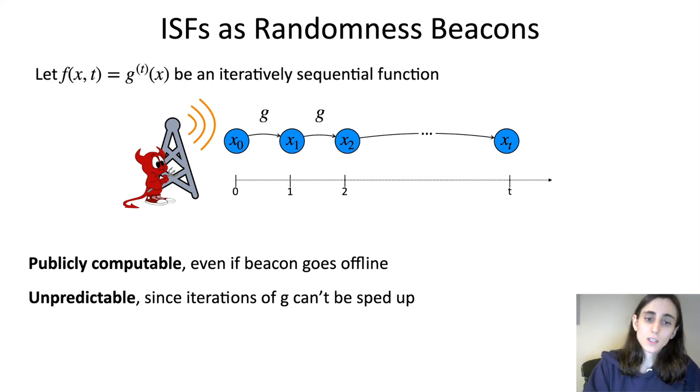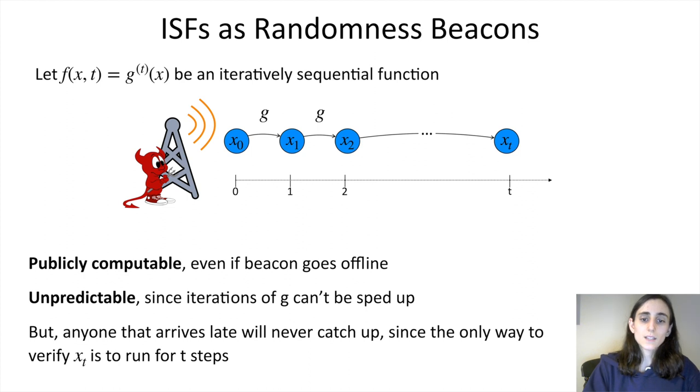The downside, though, of using this, especially in decentralized applications, is that someone who arrives late will never catch up. In particular, if someone arrives at time t and they see the value of xt, the only way for them to verify it, to know that it's the true value of the beacon, is to run for t steps. But by that time, the beacon will already be at 2t, so they'll always be behind. So really what we want is a beacon that's also verifiable efficiently at every step.